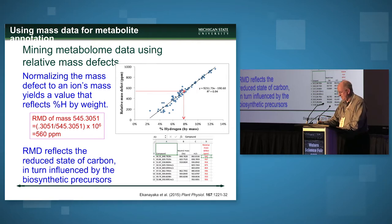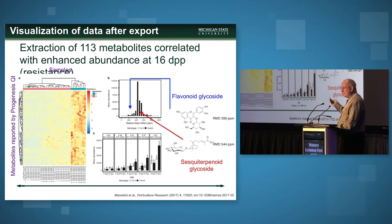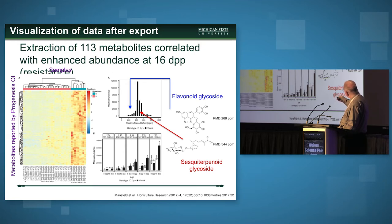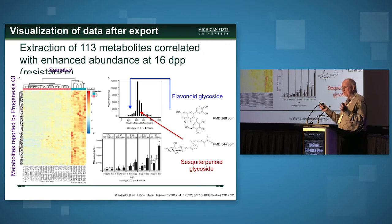This is a histogram of all compounds we see: black bars are the disease-resistant cucumber, white bars are the disease-susceptible cucumber. As they go into the disease-resistant stage, it's the higher relative mass defects — about 400 to 600 parts per million, hydrogen-rich compounds — that are the things changing. The low relative mass defects, where you would see flavonoid polyphenolic metabolites, are very low abundance and not very important in the course of the disease.